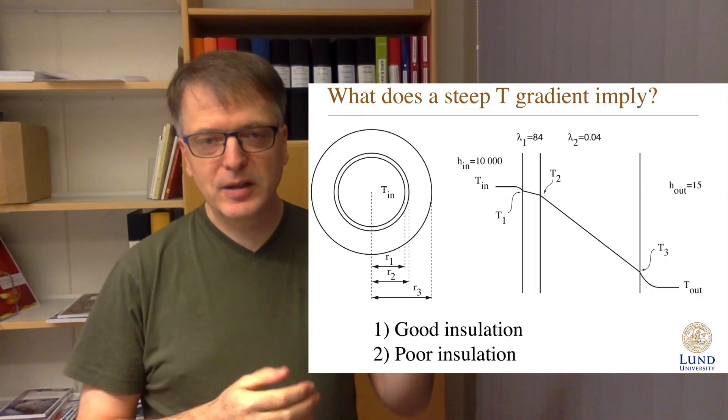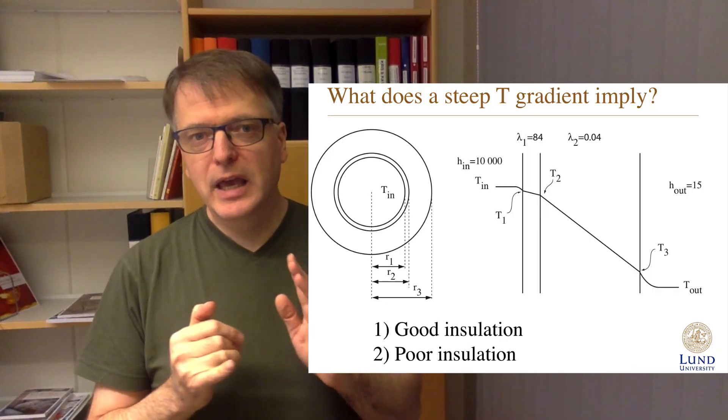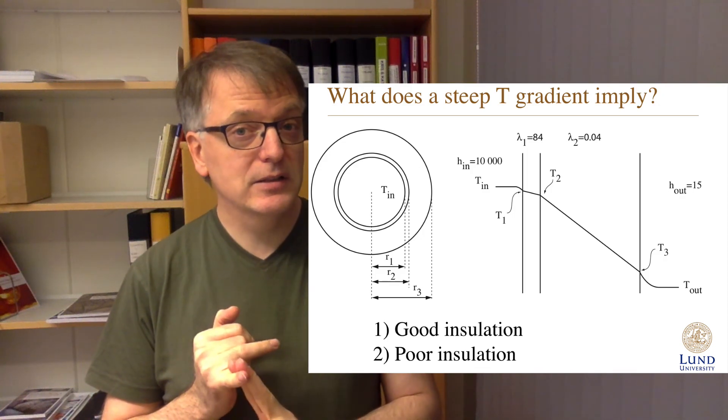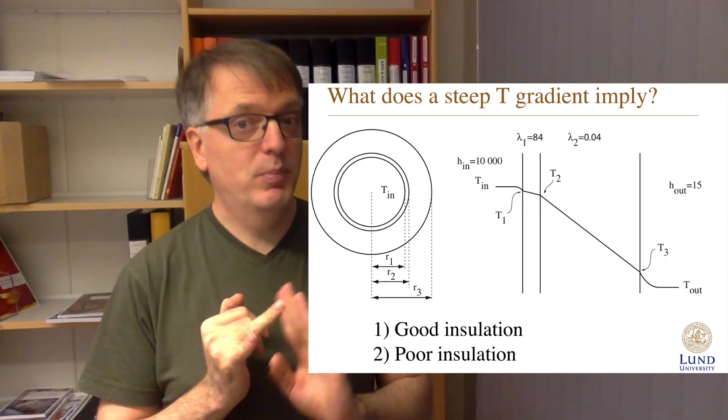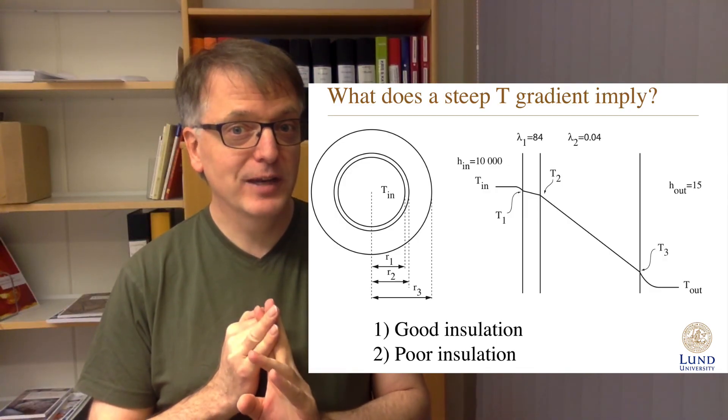Finally, before heading to an example in the next screencast: what does a steep temperature gradient actually imply? Looking at the figure, you can see that the temperature gradient differs in different places. Is a steep temperature gradient something that denotes good insulation or poor insulation? Look at the next screencast for the answer.